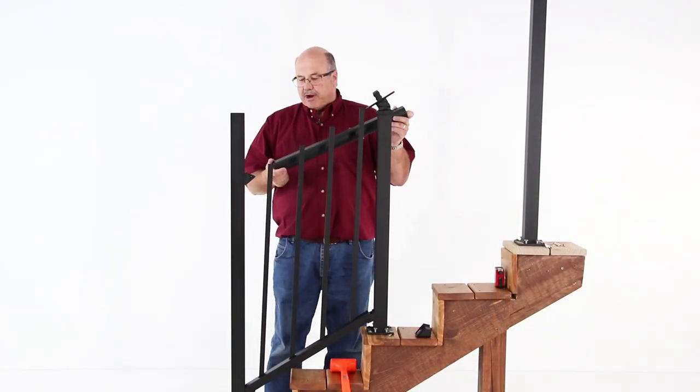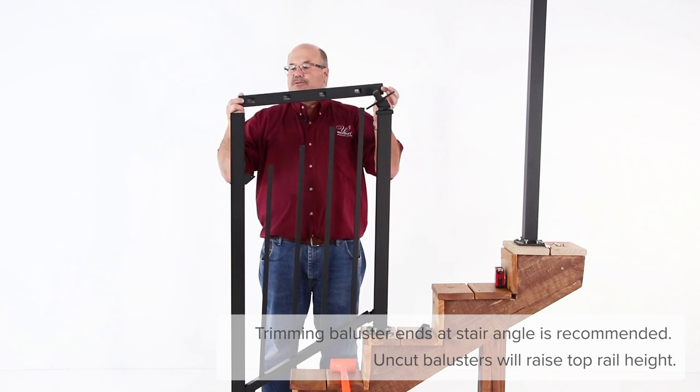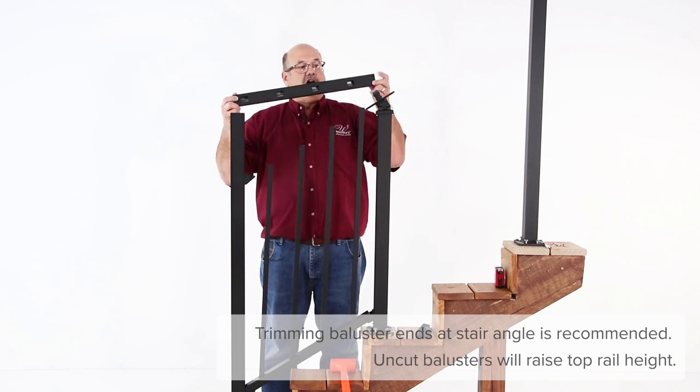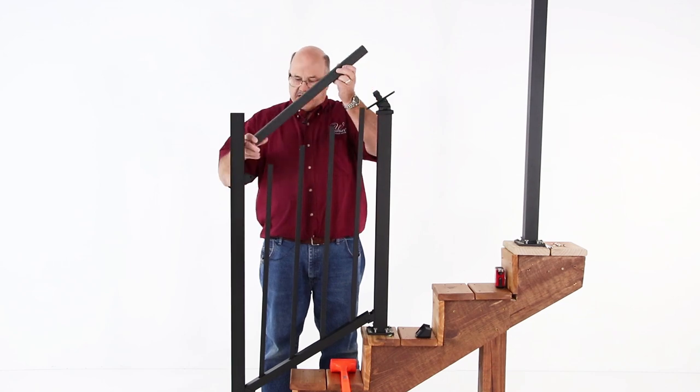We're ready to install the top rail onto the balusters, and you'll notice there are two different baluster spacings. There's a short side and a long side. The long side is going to go on my stair crossover side.